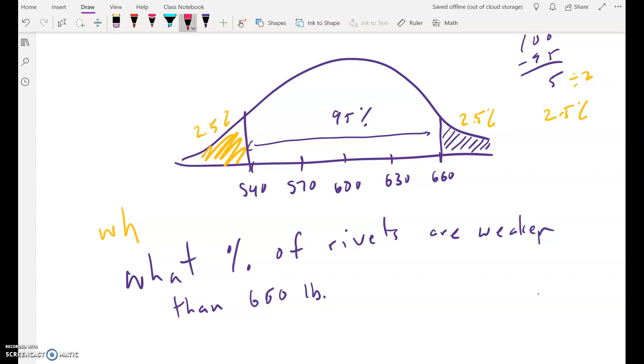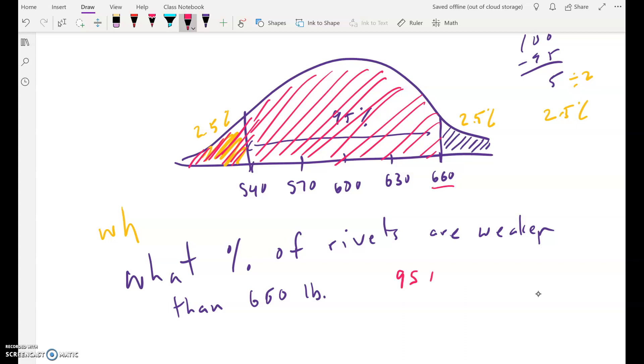Okay, so let's shade that in red here. So here's 660. So we're talking about all this. We're talking about the entire 95% plus this 2.5%. All that is the weaker part. And so to answer the question, a couple ways to do it. You can add this parts together, 95% plus 2.5%, which would be 97.5%. So there's your answer.